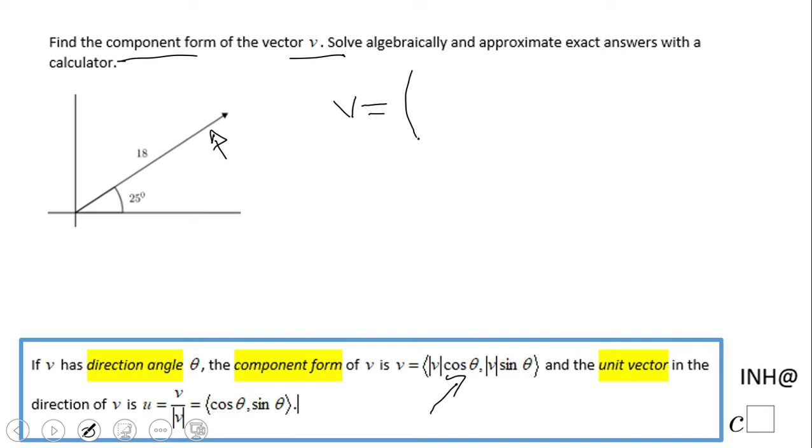That is this 18, how long the vector is, and then cosine of theta. Theta is this angle, 25 degrees. And then we have the second part: again, the magnitude of vector V, that is this gentleman here, sine of 25. And that's it. The math now is just gonna do some calculation.